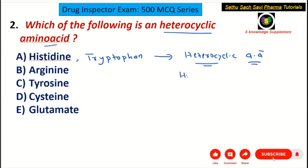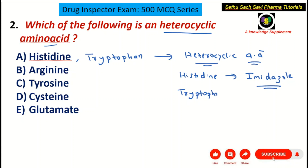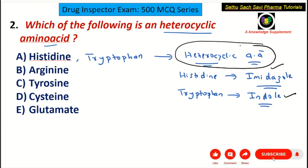For example, histidine contains the heterocyclic ring called imidazole. Whereas tryptophan contains the heterocyclic ring called indole. Since they contain these heterocyclic rings such as imidazole or indole, they belong to the category of heterocyclic amino acids. So histidine and tryptophan are the examples for heterocyclic amino acids.